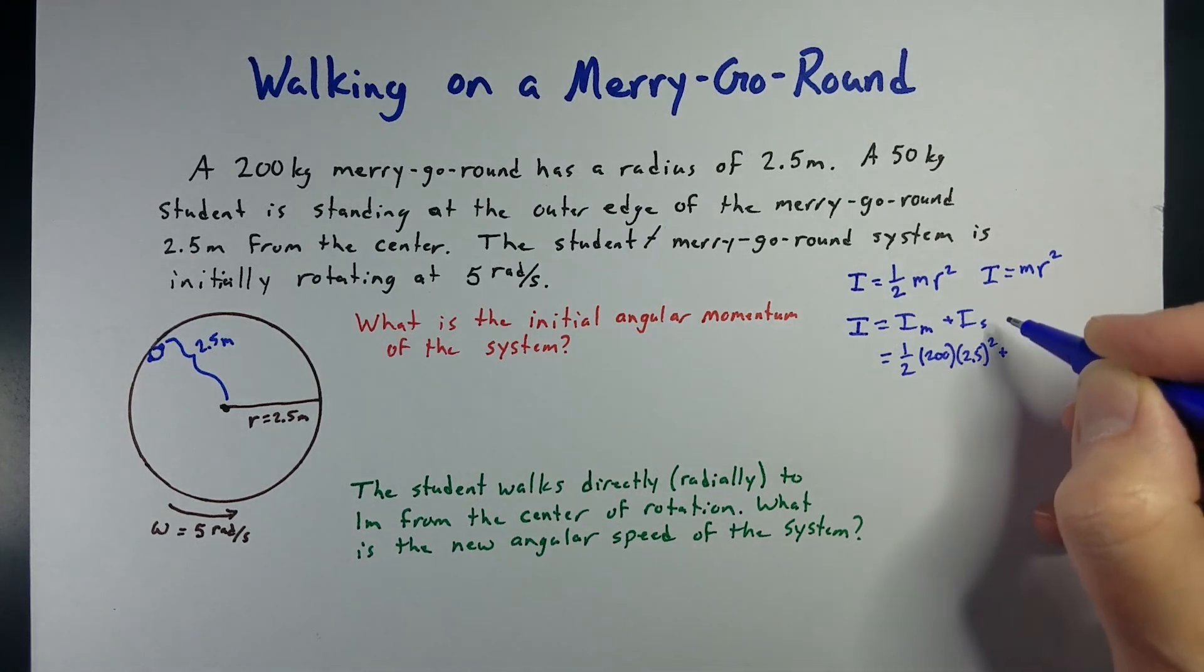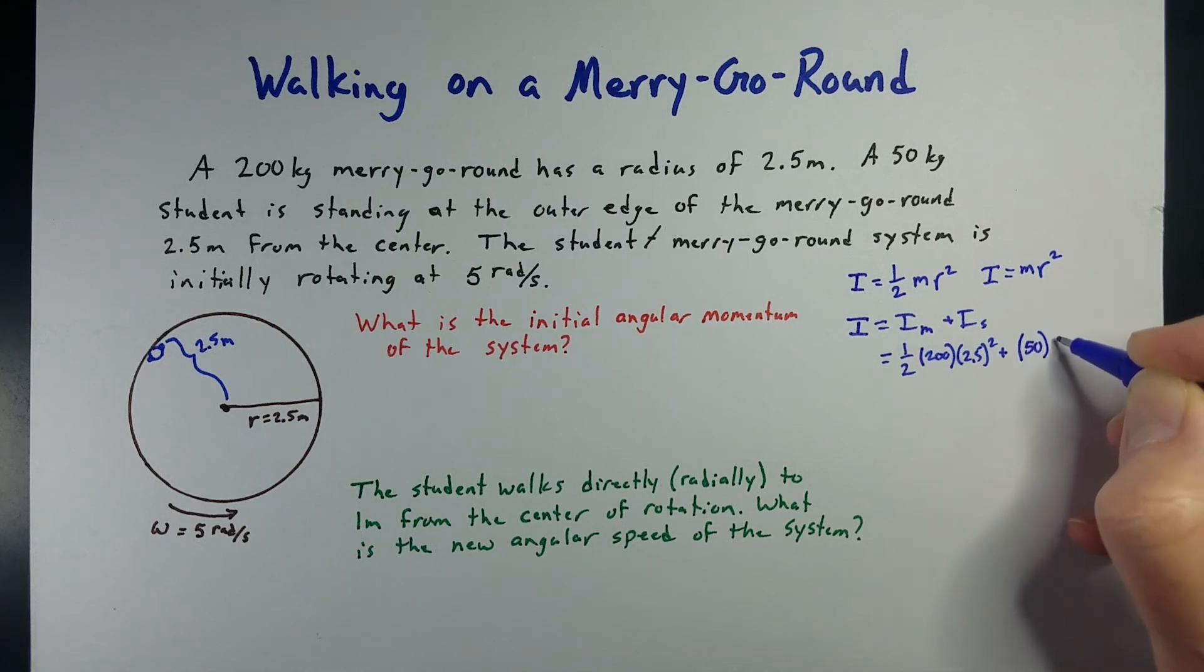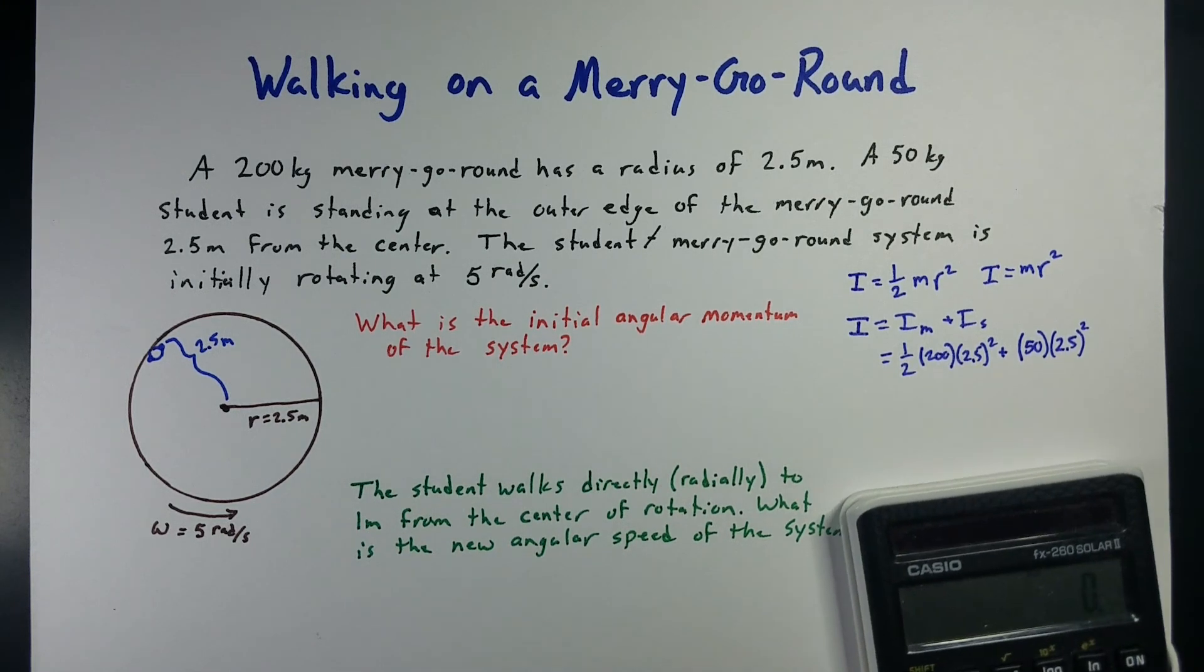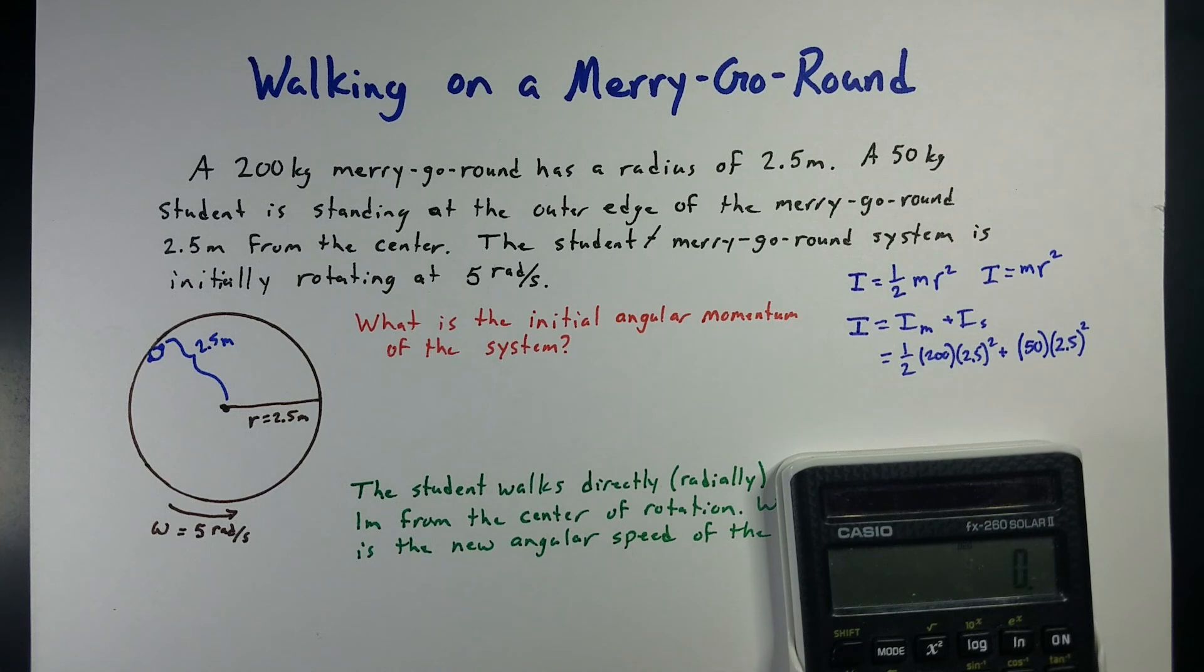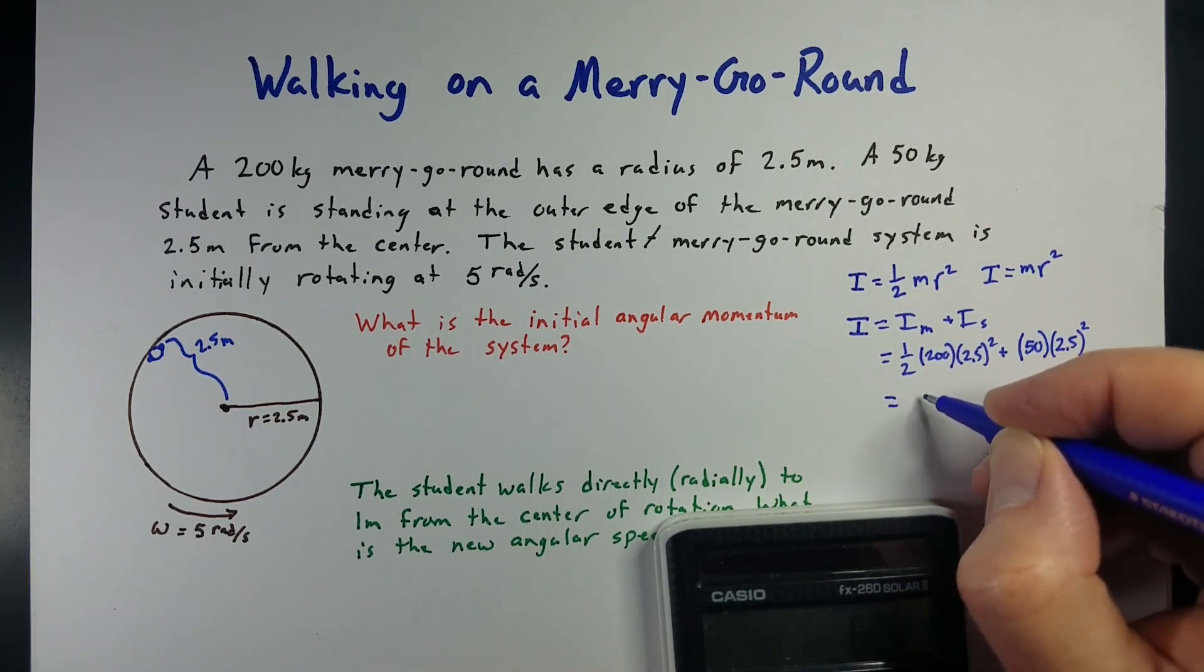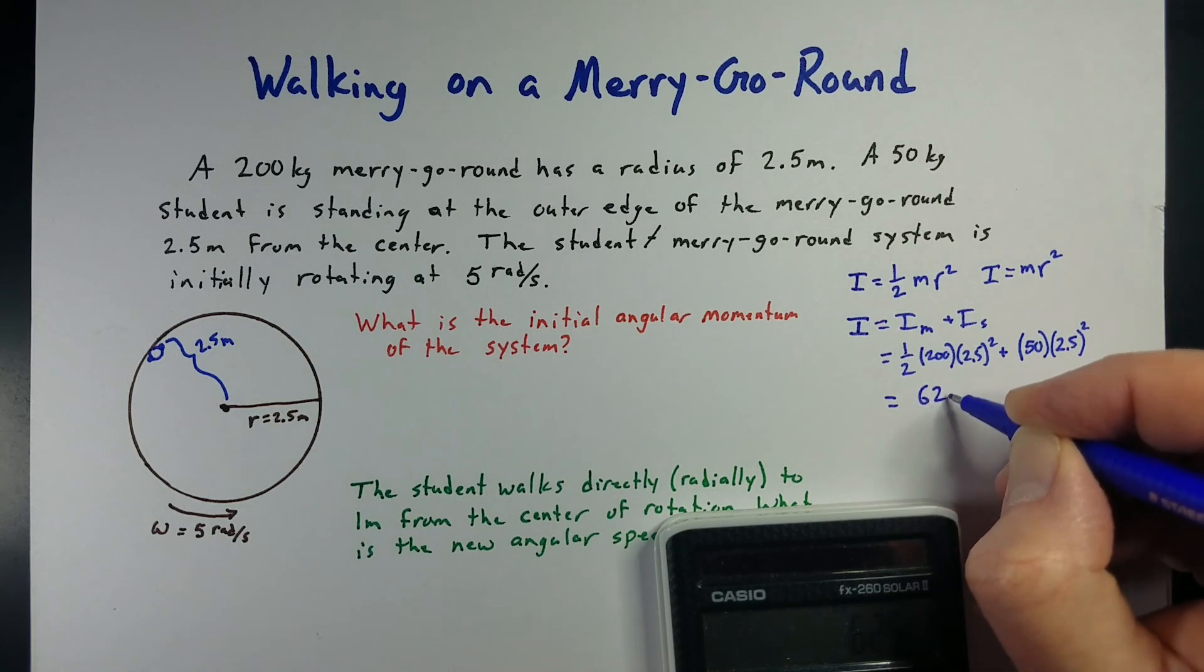Plus the moment of inertia of the student, which the person's mass is 50, and they're going to start off at 2.5 meters from the center of the circle. So, let's go ahead and calculate that. I want to do them individually. So, 2.5 squared times 100 gives us, the merry-go-round has a moment of inertia of 625.